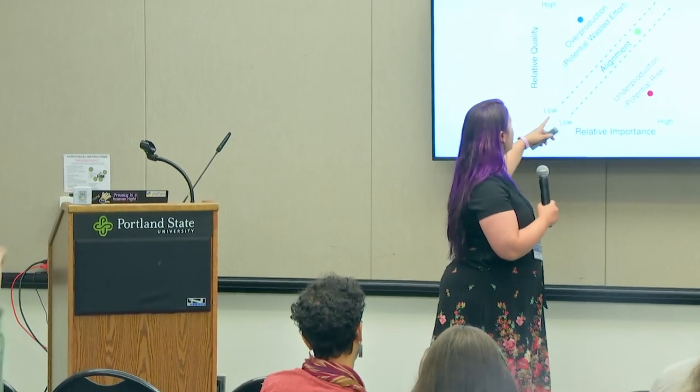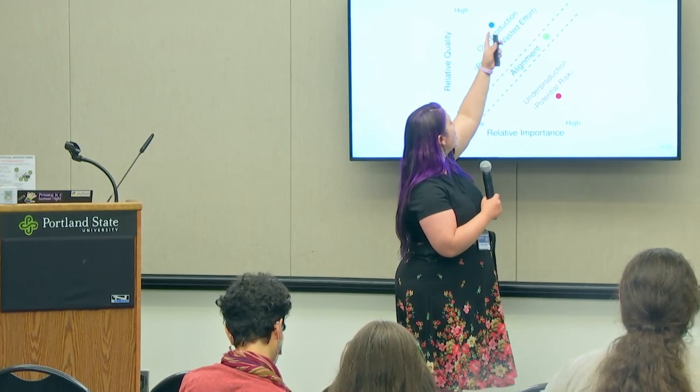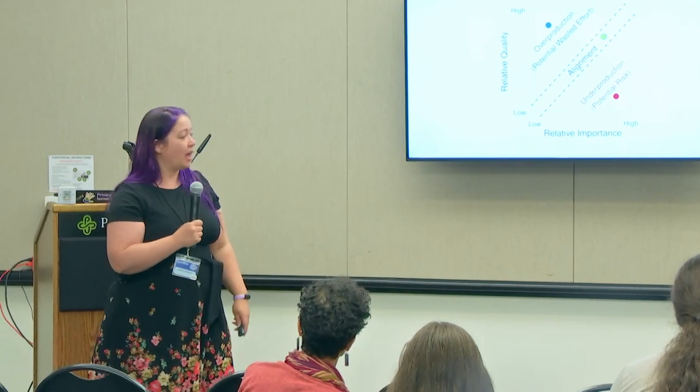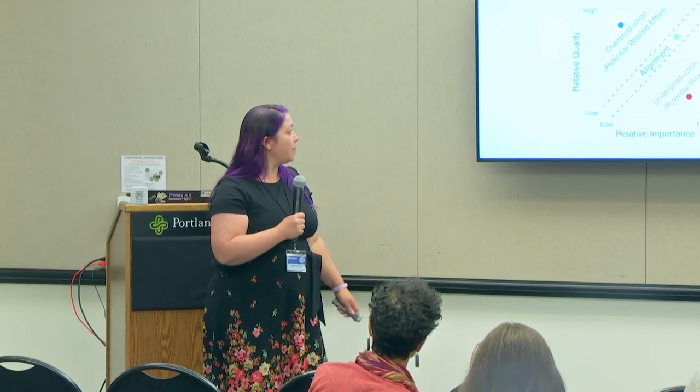My measure of quality was Pylint — super easy to install. We talked about specifying a relationship: this mismatch of importance and quality. Where you have highly important things that are relatively low quality, you live in this land of risk. If importance is pretty good and quality is pretty good, we call those aligned. If importance is relatively low and quality is high, that's overproduction — a potential for wasted effort if your package is great quality and no one is using it.